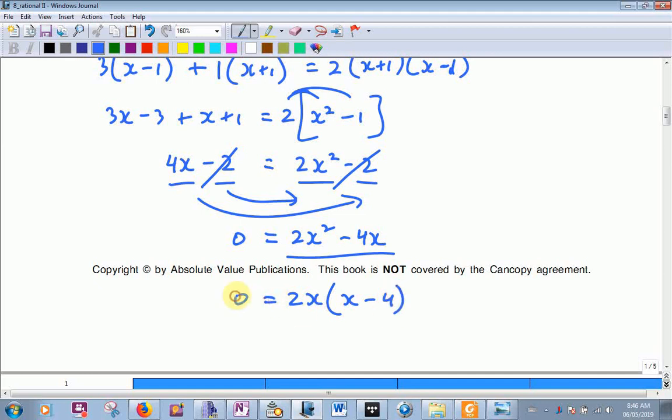x times x minus 2 equals 0. Now it's easier to see what x needs to be for this equation to work. What value of x is going to make this thing work? What value of x is going to make this equal to 0? 0. And what value of x here is going to make this equal to 0? 2. So I've got two solutions, but can they both work?